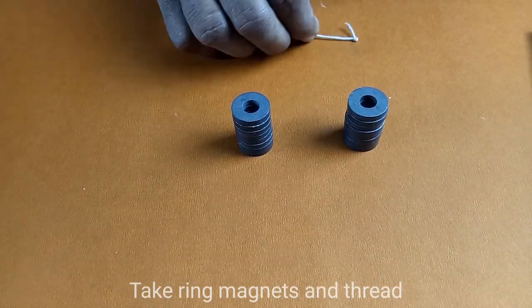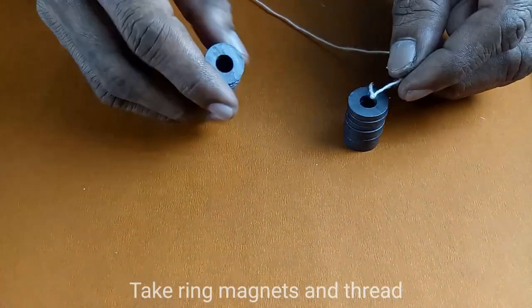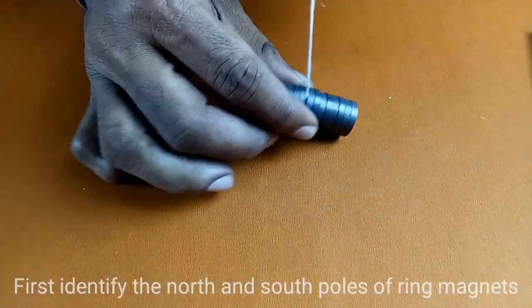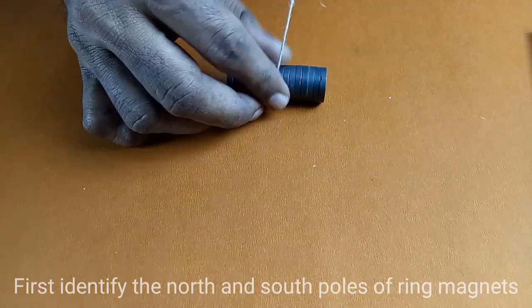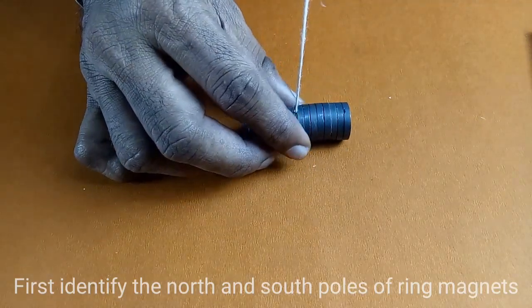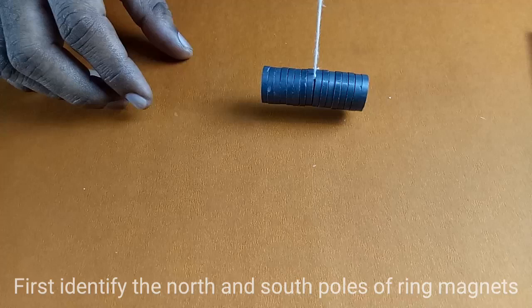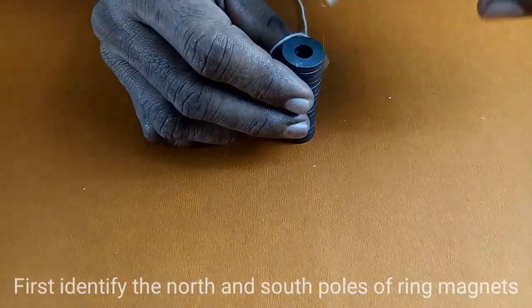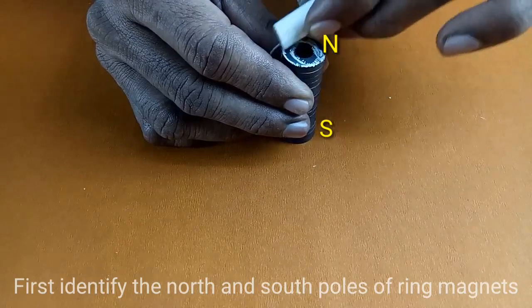Take ring magnets and thread. First identify the north and south poles of the ring magnets. Mark the north pole with a piece of chalk.